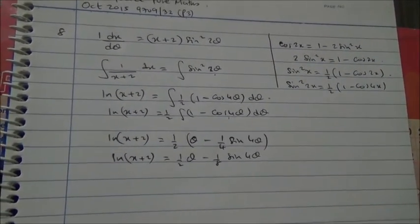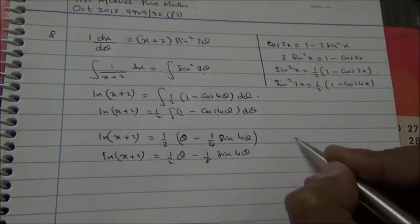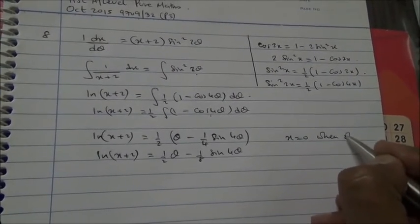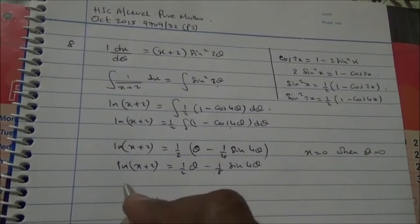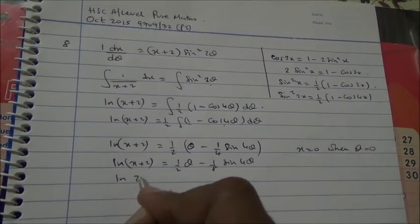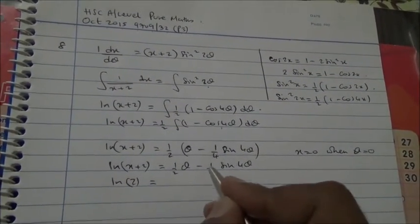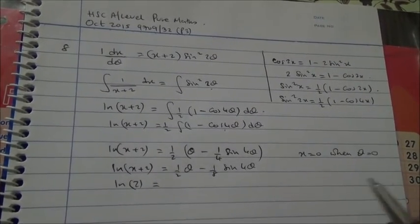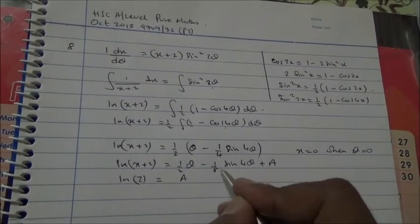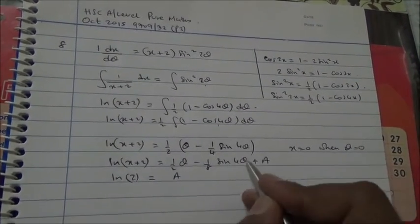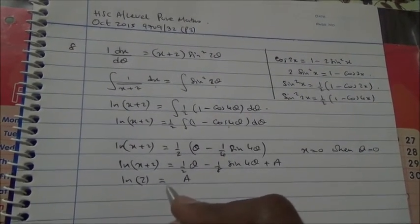So, ln x plus 2 equals half of theta minus 1 eighth of sine 4 theta. Now we're told that x equals 0 when theta equals 0. We're going to replace all of that by 0. So if you put 0 here, it's going to become 0, 0 plus 2. So ln 2 equals half times 0 is 0, 1 over 8 times sine of 0 is 0, and then plus the A. If you substitute theta equals 0 in here, sine of 0 is 0. So A equals ln 2.